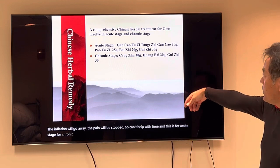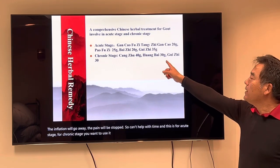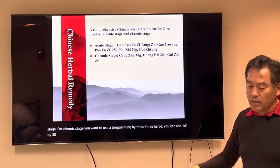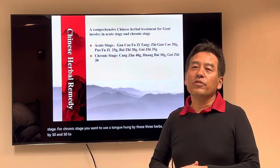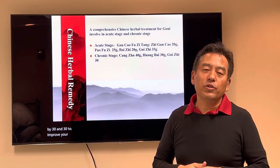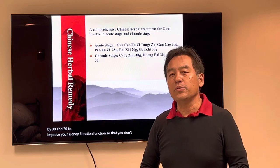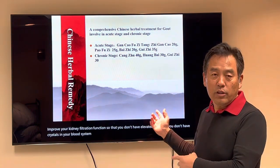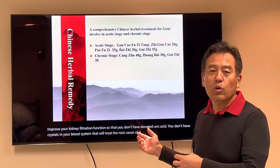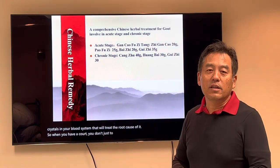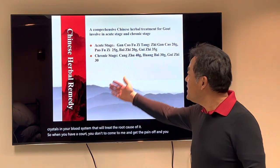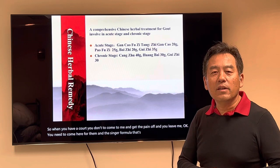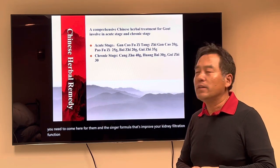For the chronic stage, you want to use Cang Zhu, Huang Bai, and Gui Zhi — these three herbs. You can use Cang Zhu 40g, Huang Bai 30g, and Gui Zhi 30g to improve your kidney filtration function so that you don't have elevated uric acid and you don't have crystals in your blood system. That will treat the root cause of it. So when you have gout, you don't just come to get the pain off and leave — you need to come back for the second herbal formula to improve your kidney filtration function and get rid of it for good.